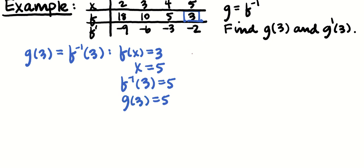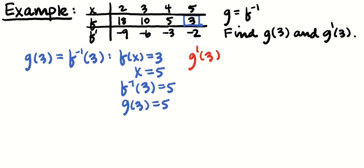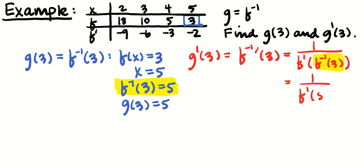So I'm going to find g prime of 3. g prime of 3 is the derivative of f inverse at 3. We've got a formula for that. It's 1 over f prime of f inverse of 3. But I know what f inverse of 3 is. I just did all that work to find it. f inverse of 3 is 5. And that's equal to 1 over f prime of 5. And f prime of 5 is looking like negative 2. So this is 1 over negative 2, which is negative one half. If you feel like you want to try this on your own, pause the video and find g(5) and g prime of 5).